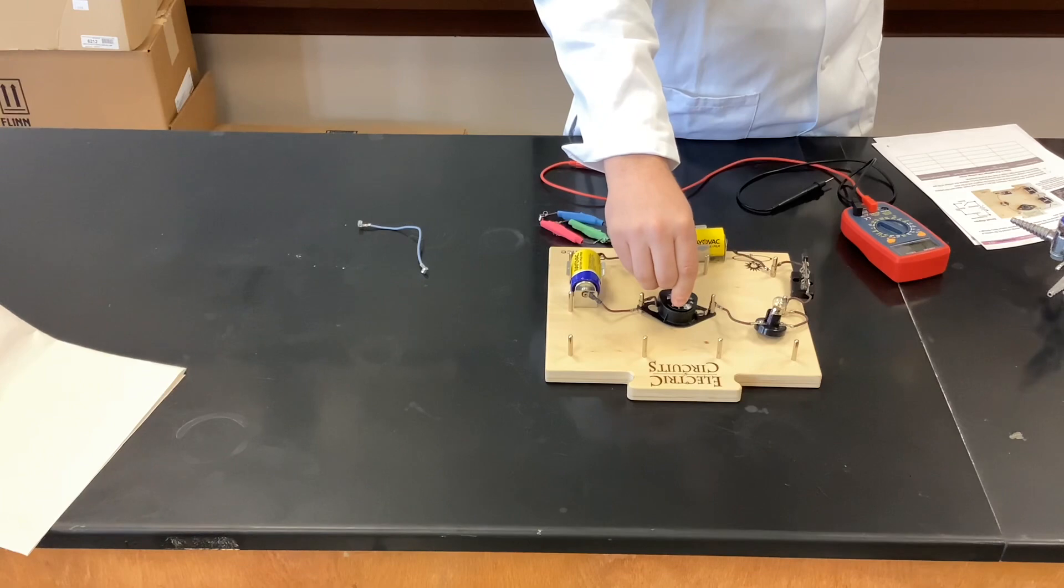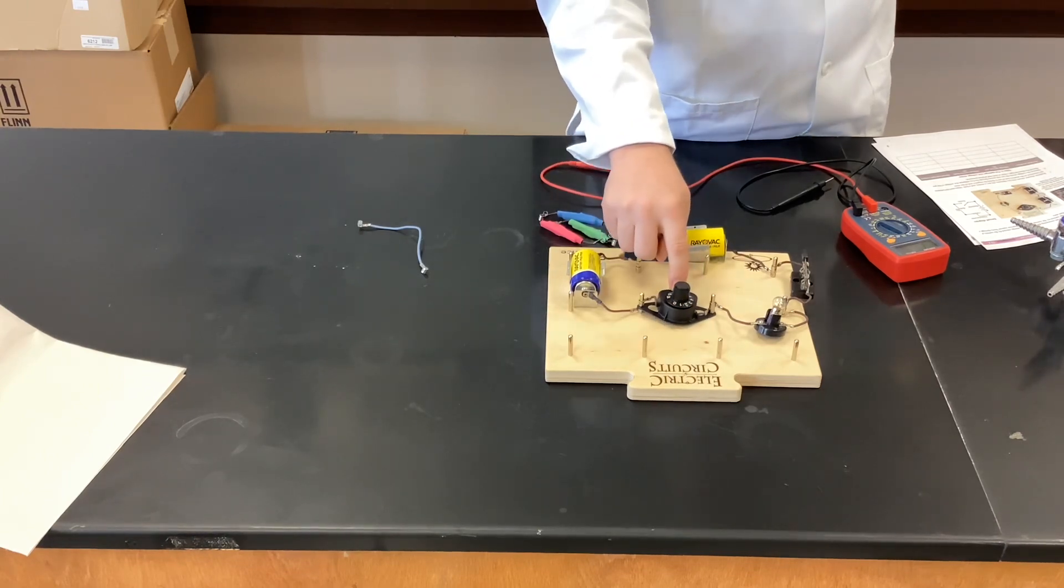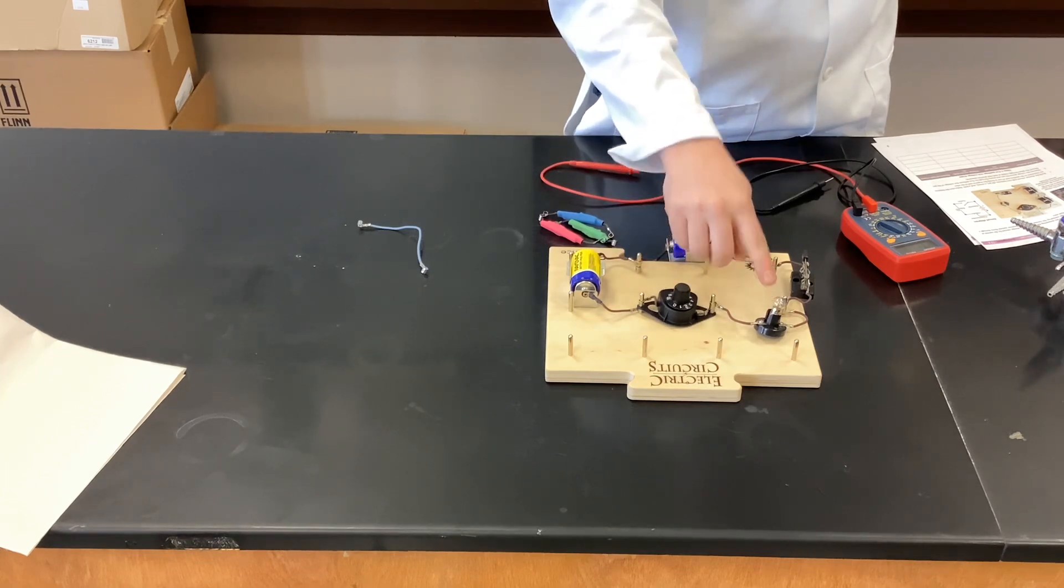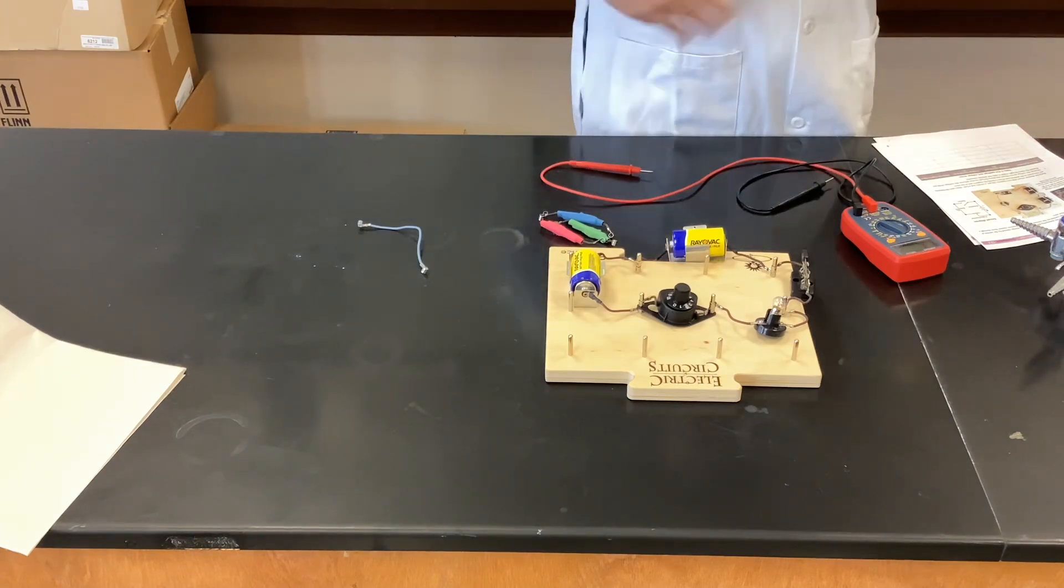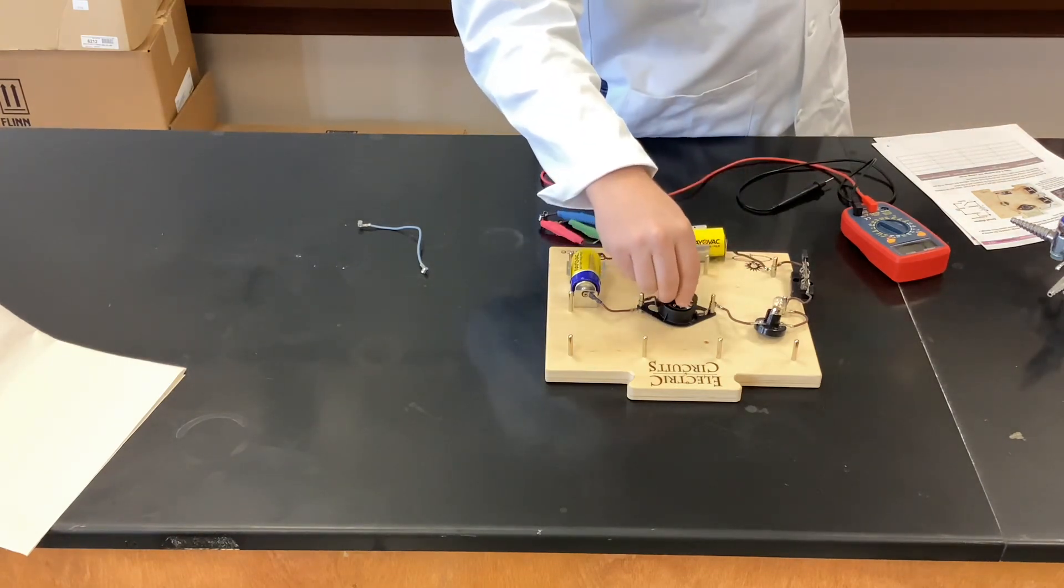So I'm turning, turning, turning, turning. Now I see light. Even though I'm set at seven, I don't see a light. That doesn't mean that there's not a current. So students will actually measure and go, okay, there's still current going through there, even though I don't see a light.